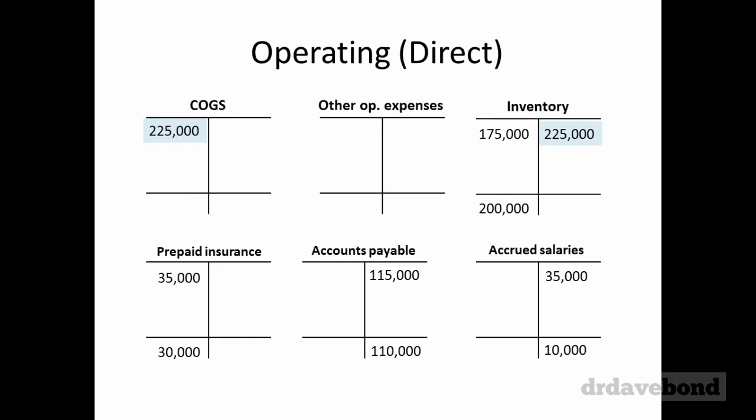For cost of goods sold, we were told there was $225,000 of cost of goods sold — that would be debit cost of goods sold, credit inventory $225,000. But inventory doesn't balance out at $200,000 — it would actually be a negative number — so we must have acquired additional inventory somewhere along the way. That amount is $250,000, so debit inventory $250,000, credit accounts payable $250,000.